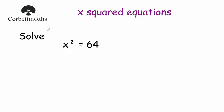Our next question says: solve x squared equals 64. We've got our equation with the squared symbol: x squared equals 64. Now 8 squared is equal to 64, so 8 is one of our solutions. Also remember, the square root of 64 is 8.